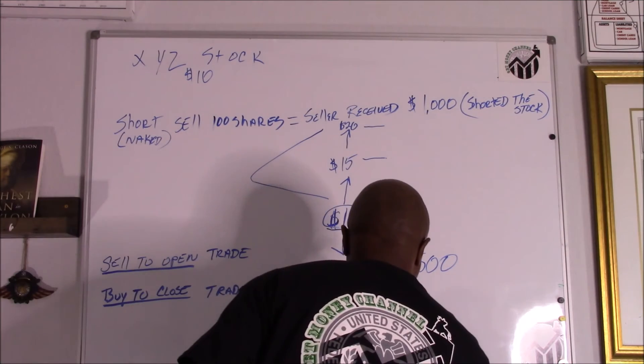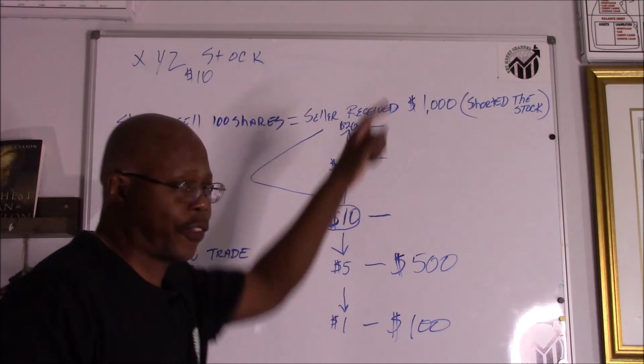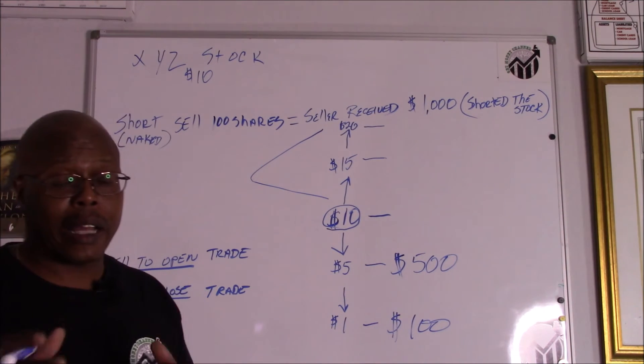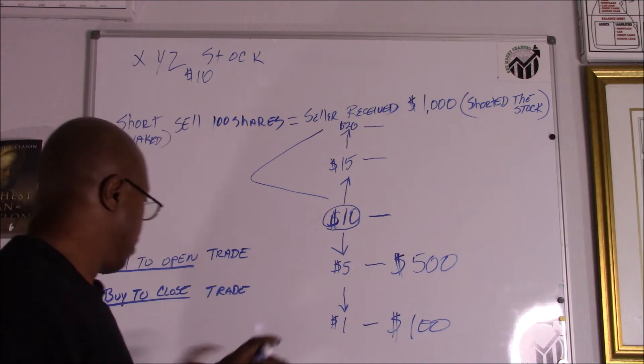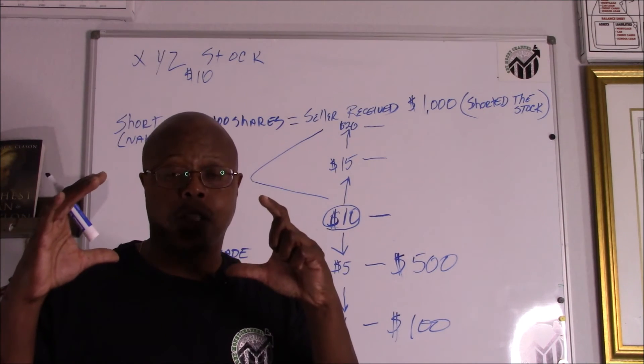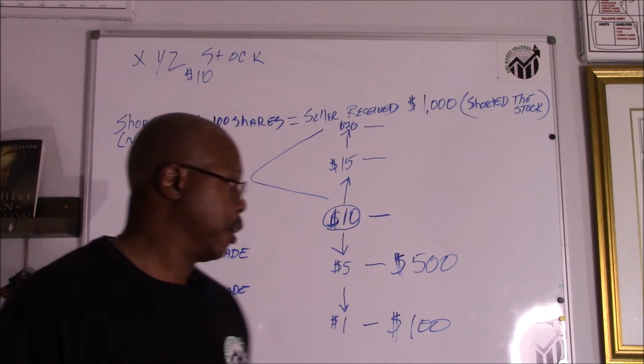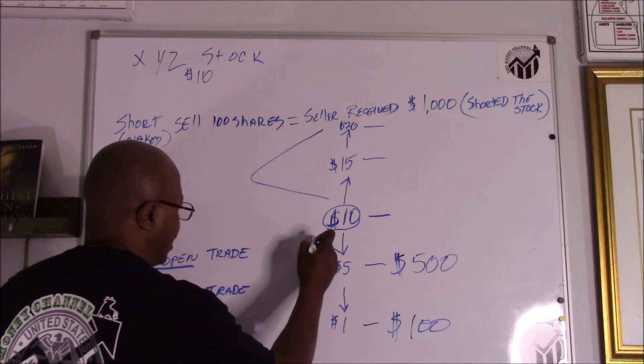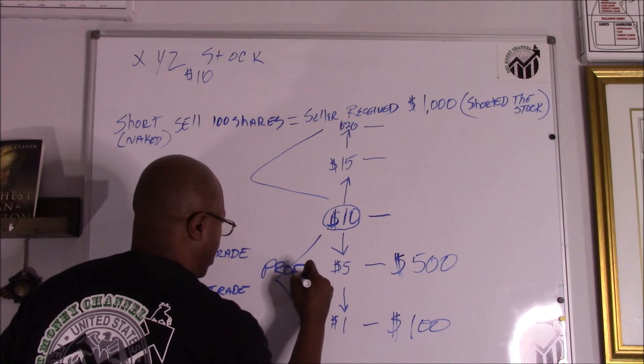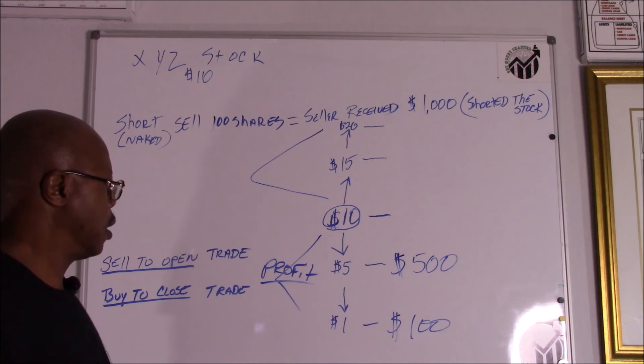If it goes down to a dollar, the difference between that dollar and $1,000 is $900. That's a $900 profit. Once they buy to close out that trade, what will happen is that $900 will be released from collateral, goes back, they can do what they want with it. When it does this, they're receiving a profit from it. Anything below that $10 is a profit.